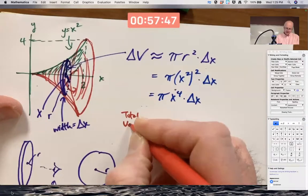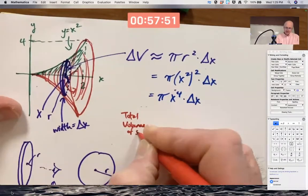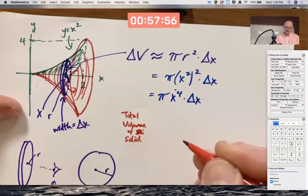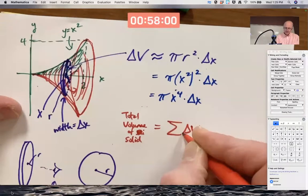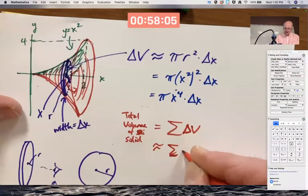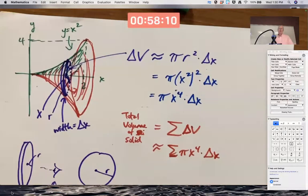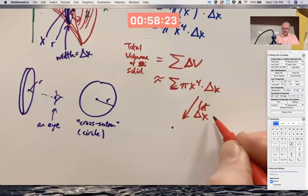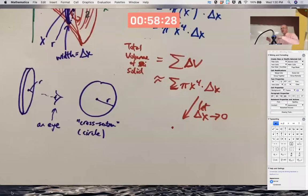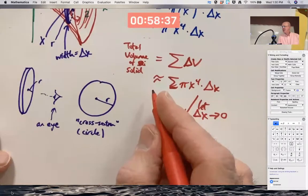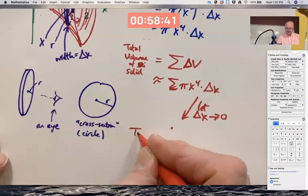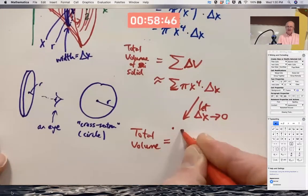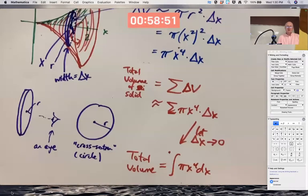Anyway, the total volume of the solid, then, the entire solid, is the sum of the little volumes, which would be approximately the sum of these things: pi x to the fourth times delta x. And then, here's where the magic happens. Let delta x go to zero. And the summation magically morphs into an integral sign. And the delta x magically morphs into a dx. And we get the exact correct final answer. The approximately equal sign morphs into an equal sign. The total volume is exactly the integral of pi times x to the fourth dx, where you do need to choose the appropriate limits of integration.